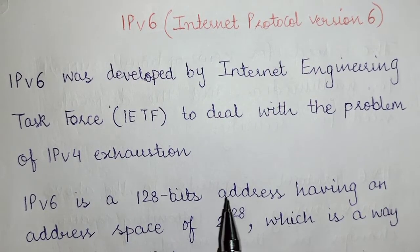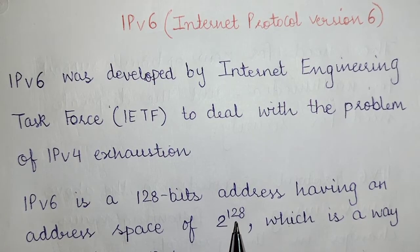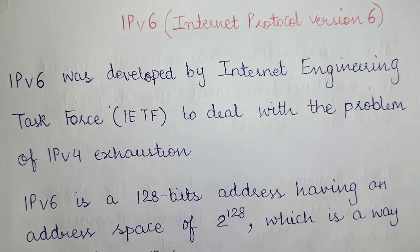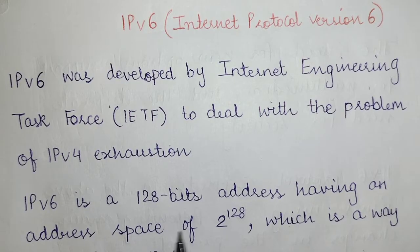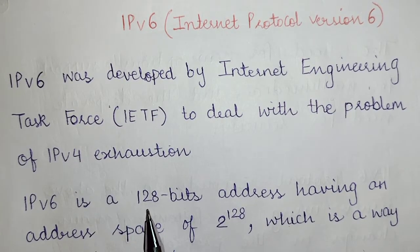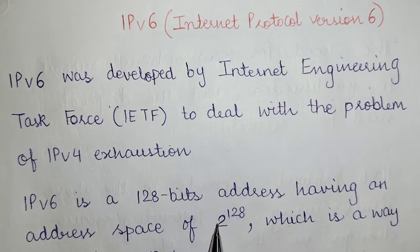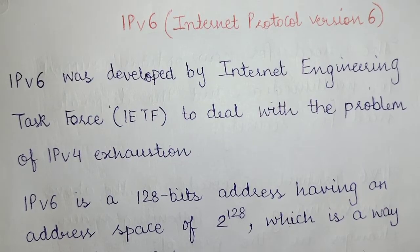IPv6 is a 128-bit address having an address space of 2 to the power 128, which is way bigger than IPv4. In IPv4 we have a 32-bit address space, making an address space of 2 to the power 32. So IPv6 with 128-bit addresses gives an address space of 2 to the power 128.